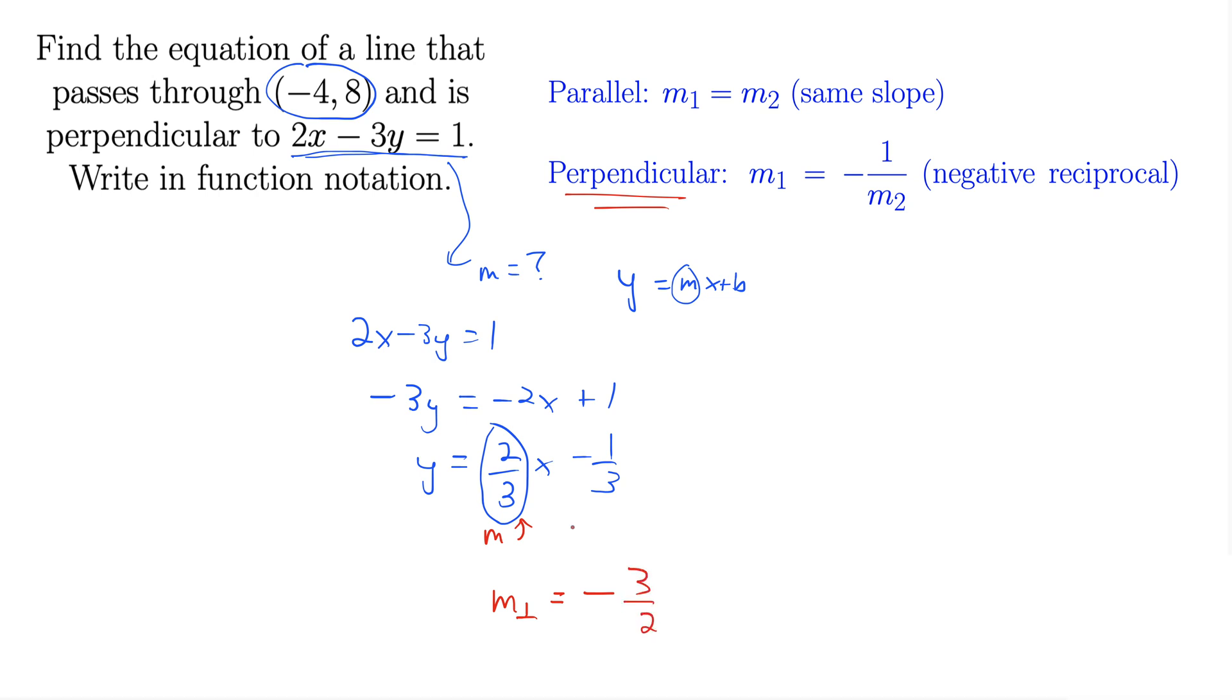So 3 halves. 2 thirds becomes 3 halves. You flip them.